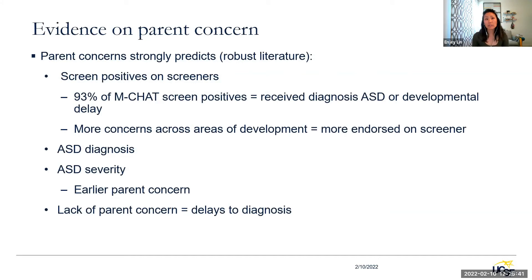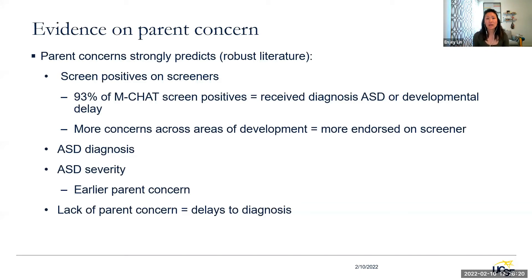Research robustly shows that parent concerns strongly predict screen positives. In one study, 93% of M-CHAT screen positives had concerned parents and those children received a diagnosis of ASD or developmental delay. The more concerns a parent has across areas of development, the more items are endorsed on screeners. Parent concerns also predict diagnosis as well as severity of ASD — earlier parent concern is usually linked to more severe presentations. The lack of parent concern when there is reason to have concern results in delays in diagnosis.